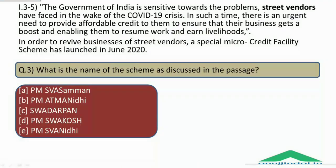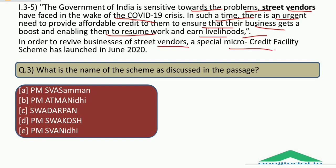Now let's move to questions 3 to 5, which are about the PM SVANidhi scheme. The government of India is sensitive towards the problems street vendors have faced in the wake of the COVID-19 crisis. There is an urgent need to provide affordable credit to them to revive their businesses. A special micro credit facility scheme has been launched in June 2020 — the name of the scheme is PM SVANidhi.